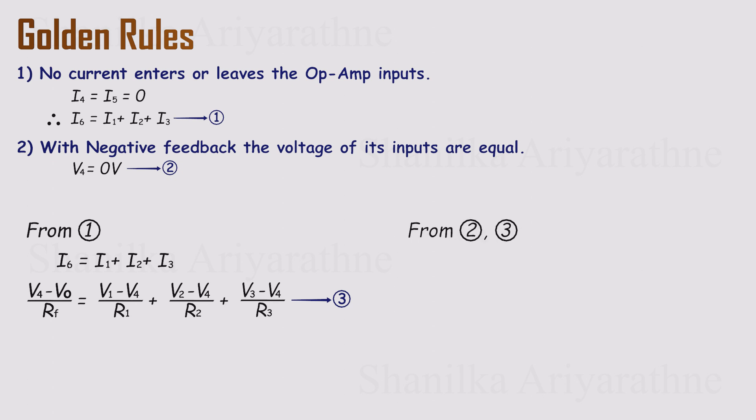Since the inverting node, V4, is at virtual ground, that means V4 is zero volts. Suddenly all those terms simplify nicely.